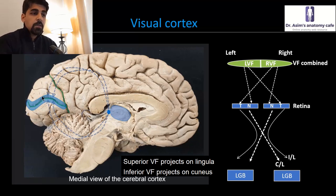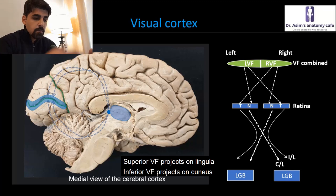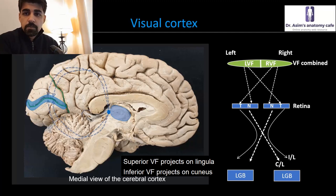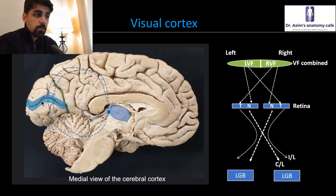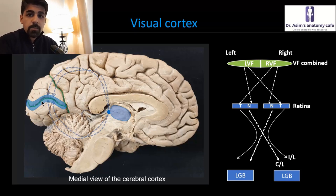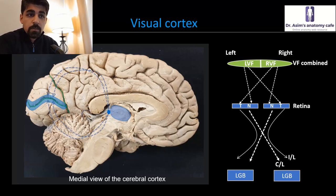So what I'm trying to say is that if you're looking at me, for example, my image will be projected onto your primary visual area in an upside-down fashion — my image is going to be flipped over in a vertical axis as well.